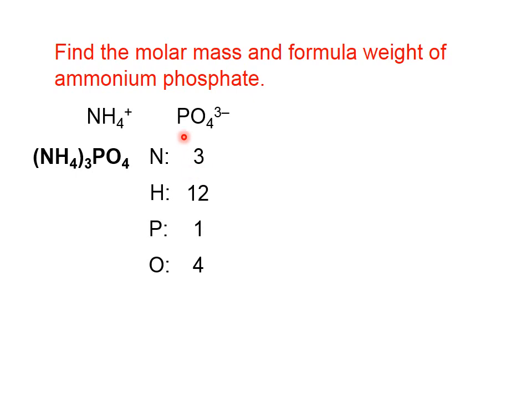In 1 mole of ammonium phosphate, there are 3 moles of nitrogen. In 1 mole of ammonium phosphate, there are 12 moles of hydrogen, 1 mole of phosphorus, and 4 moles of oxygen.